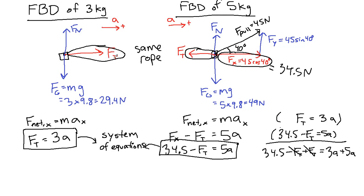It's the same rope, the same tension, but one of the edges is pulling the block forward and one of the edges of the rope is pulling the block backwards. So we get 34.5 equals, and then 3a plus 5a is 8a.